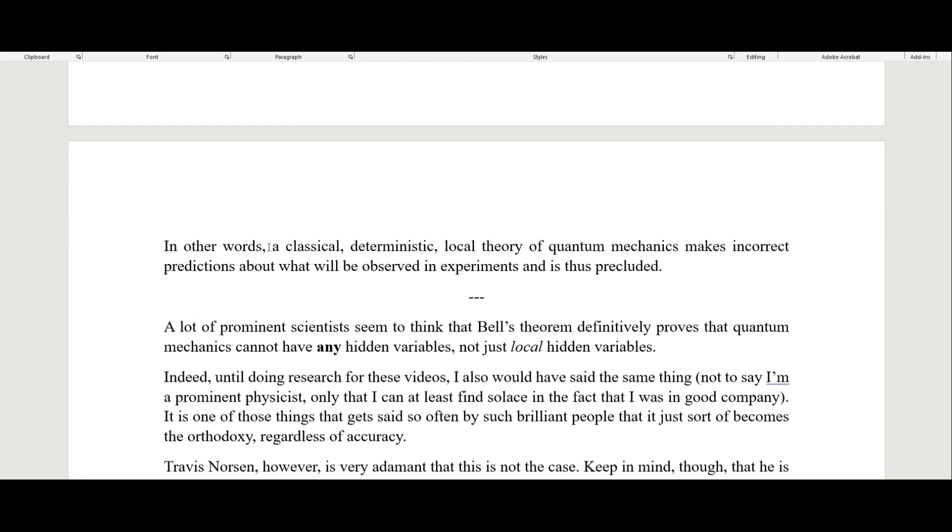In other words, a classical deterministic local theory of quantum mechanics makes incorrect predictions about what will be observed in experiments and is thus precluded. This is sort of coming down on that side of saying that we must have non-locality in our quantum theory.